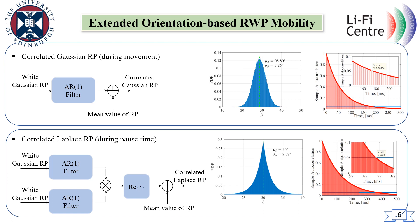In order to generate a correlated Laplace random process, we need to multiply two correlated Gaussian random processes and take either the real or imaginary parts of them. On the right side, the results of one million generated samples of the beta angle based on this technique are shown. The samples follow a Laplace distribution where the statistics — that is, mean, variance, and coherence time — are similar to the experimental measurements.